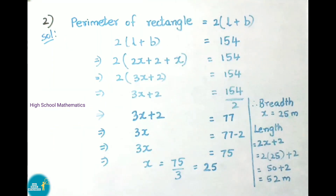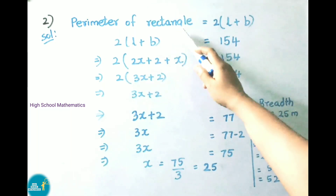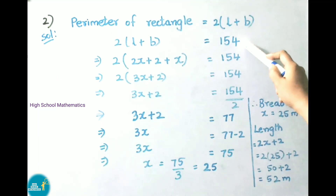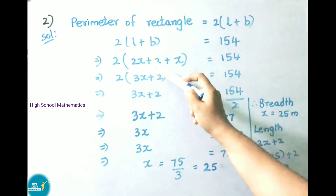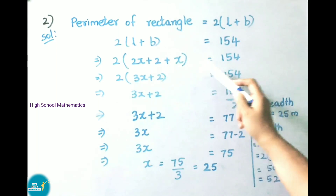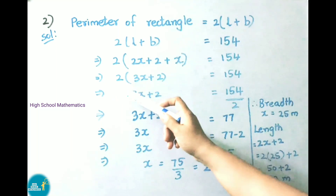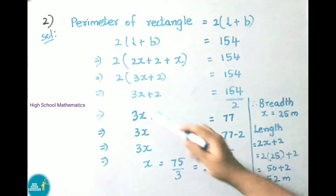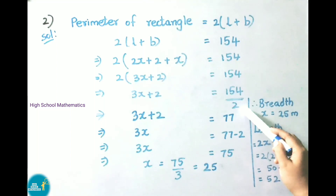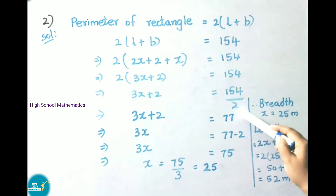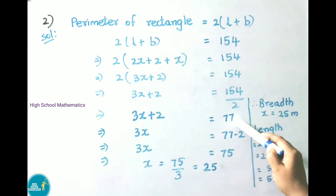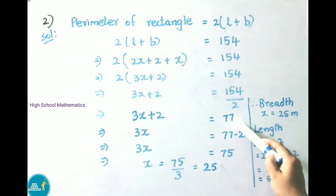The perimeter of a rectangle formula is 2 into (length plus breadth). So 2 into (length plus breadth) equals 154. That implies 2 into (2x plus 2 plus x) equals 154, giving 2 into (3x plus 2) equals 154. On transposing, 3x plus 2 equals 154 by 2, which equals 77.